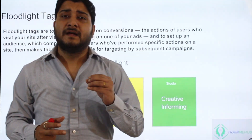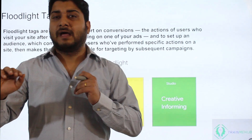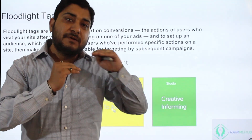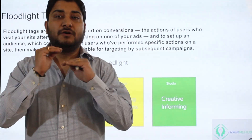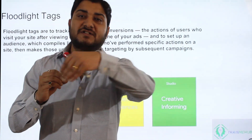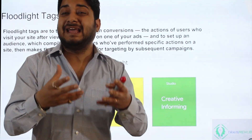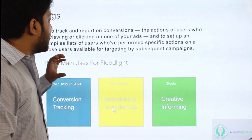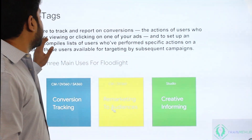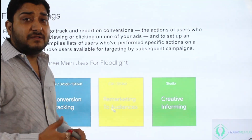A great example is Amazon. You see a product you like, but before making a purchase you drop off from the website. At every step, Amazon has implemented floodlight tags, so the moment you drop off they know the purchase lifecycle is not complete. As you navigate across different websites, they retarget you with discounts or offers to bring you back to that product. This illustrates the important role floodlight plays in tracking user actions after viewing or clicking on an ad.